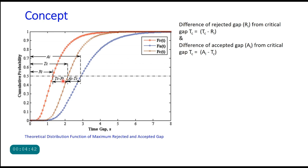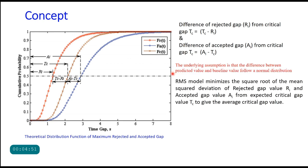Remember, Ri is less than Tc and Ai is more than Tc, and this difference should be minimized throughout the distribution.